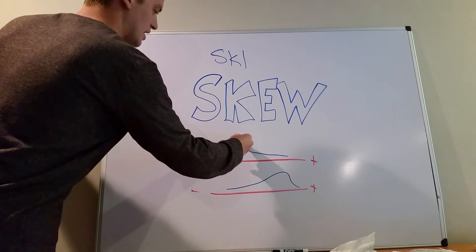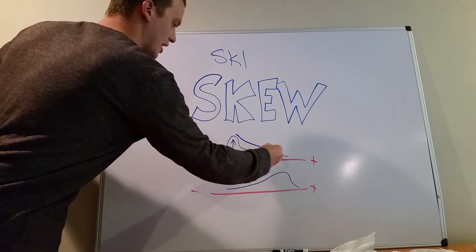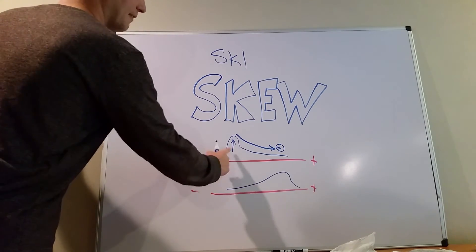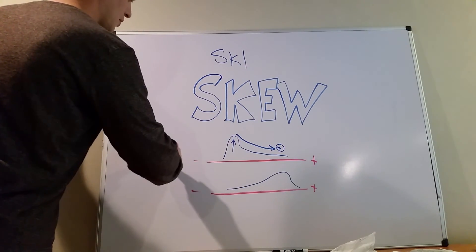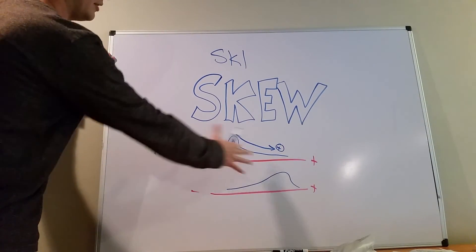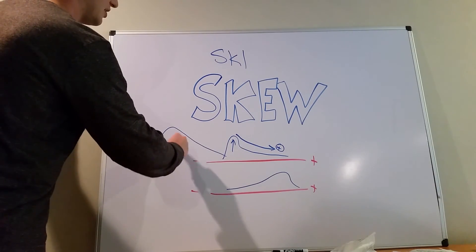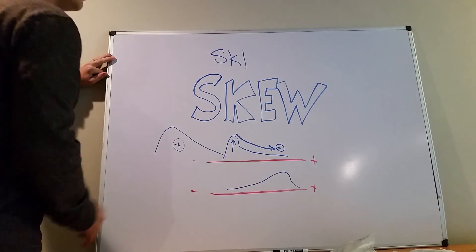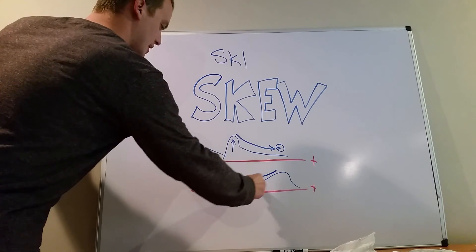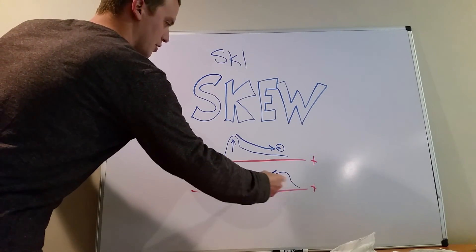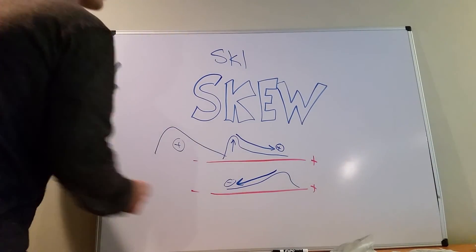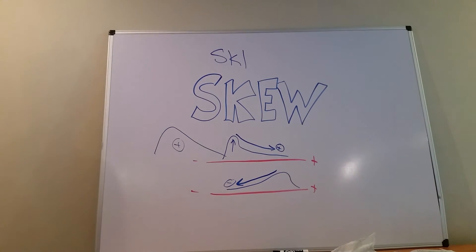So in this case, if we want to ski, we're going to ski to the right, or ski positively. A graph that looks like this — where the peak is on the left and it trails down to the right — is a positively skewed graph. Conversely, down on the bottom graph, we want to ski down the left side in a calmer fashion, and that is a negatively skewed graph.